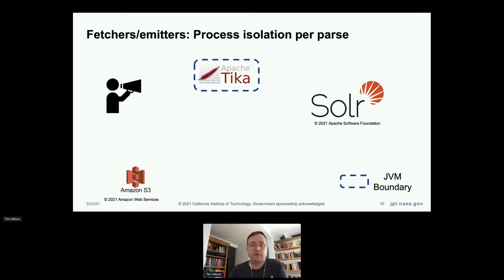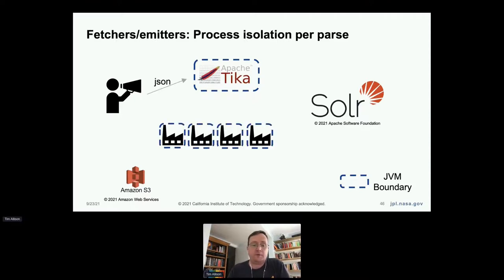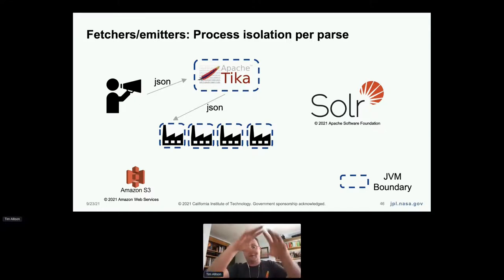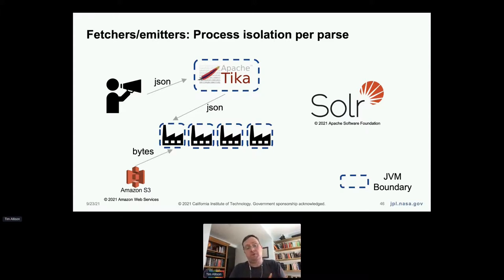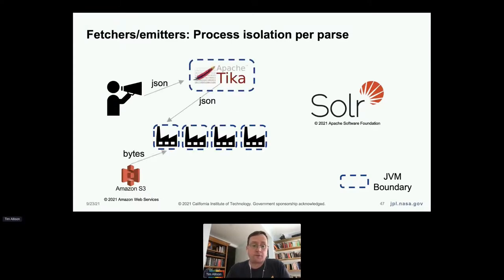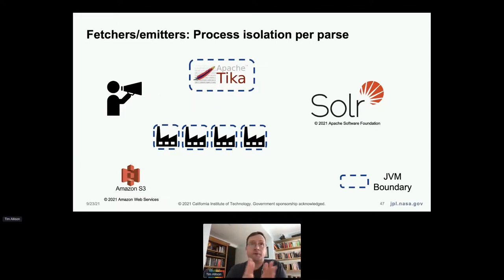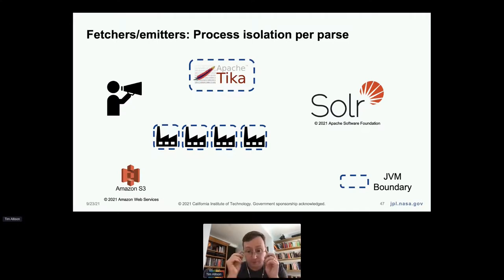In process: a client sends the fetch emit tuple to Tika as JSON, which forwards it to forked processes. Each process grabs the bytes — in this case from S3 — does the parsing, and ships those off to Solr. If something goes wrong, you have a bunch of other forked processes, and the parent process is watching all of them and will simply restart any that crash. If you're doing pipes, the main process sends back notification that something crashed. If you're doing async, it logs what crashed it. It's much more robust by breaking out all parsing one file per JVM at a time.